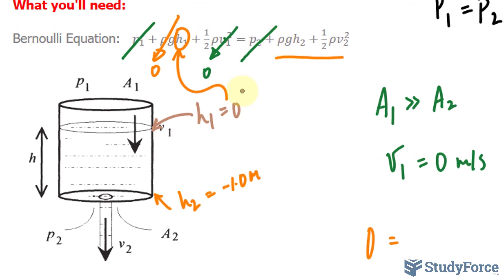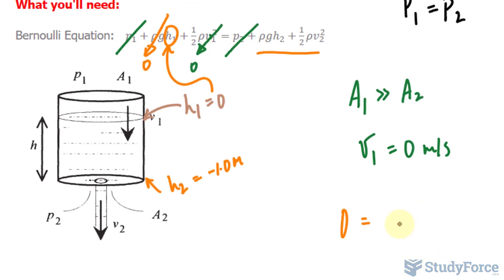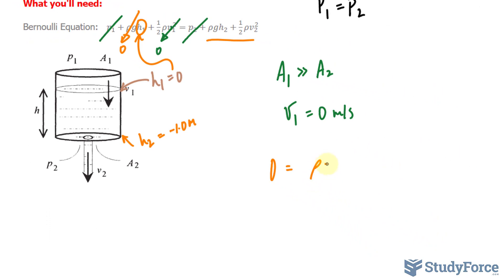We have this Greek letter rho, which represents density of water, okay, multiplied to g, the acceleration due to gravity, that's a constant, times H sub 2, plus half rho and the velocity in which we are looking for, the final velocity out of this hole.